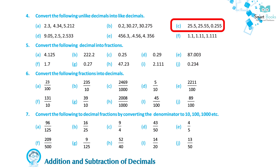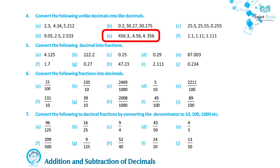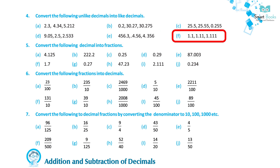Continuing Question 4. D. 9.05, 2.5, 2.533 — Solution: 9.050, 2.500, 2.533. E. 456.3, 4.56, 4.356 — Solution: 456.300, 4.560, 4.356. F. 1.1, 1.11, 1.111 — Solution: 1.100, 1.110, 1.111.